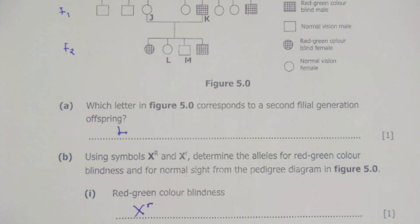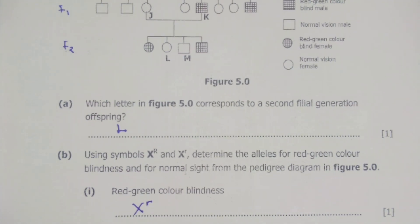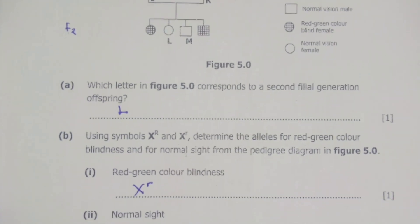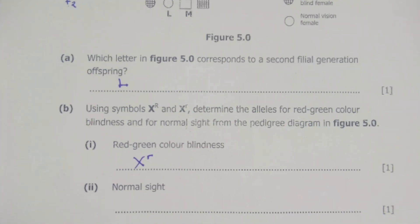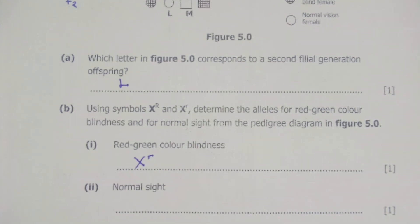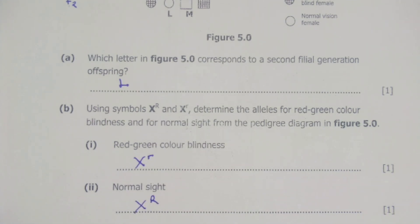Then for normal vision, the allele will be X with a capital R. So X^R gives normal sight, and X^r gives red-green color blindness. Those are our solutions for question B.